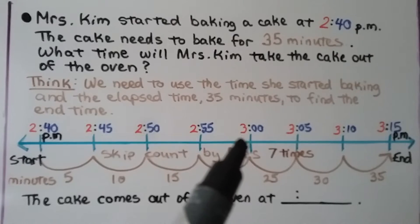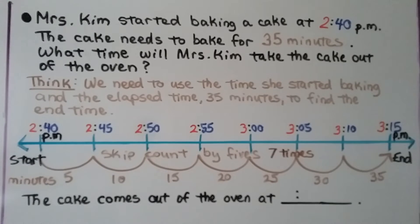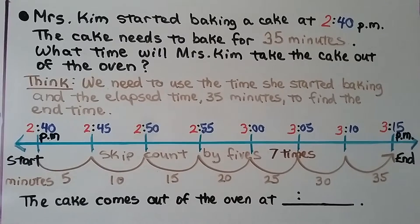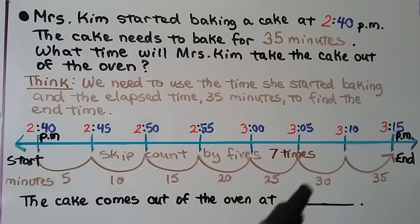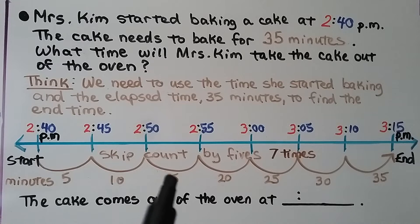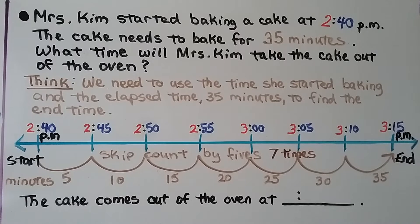Continuing: 2:50, 2:55, then it switches to 3 o'clock, then 3:05, 3:10, and 3:15 p.m. Skip counting by 5's seven times — 5, 10, 15, 20, 25, 30, 35 minutes — gets us to 3:15 p.m. We know the cake comes out of the oven at 3:15 p.m., which is 35 minutes later from 2:40 p.m.